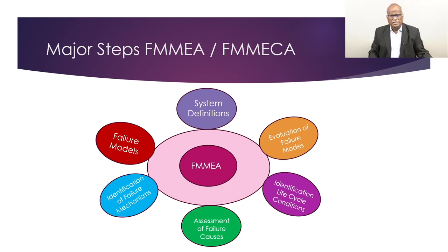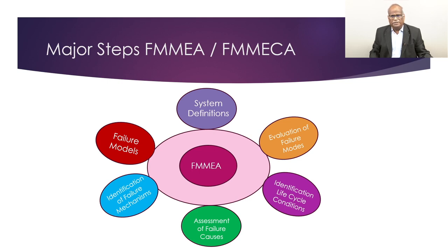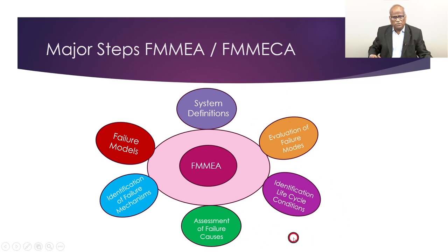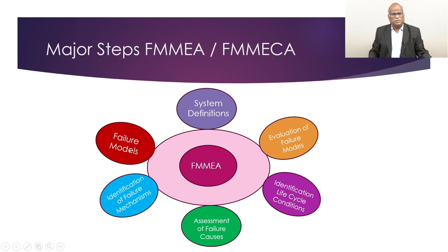There are six steps in FMMECA. First is system definition. Second is evaluation of various failure modes — one component can have more than one, such as fail to open, fail to close, short circuit, short open, or leakage. Third is identification of life cycle loads. Fourth is assessment of failure causes. Fifth is identification of failure mechanisms and failure models — critical for determining time to failure. Sixth involves criticality analysis, and the process is recursive, evolving toward a final system-level answer.